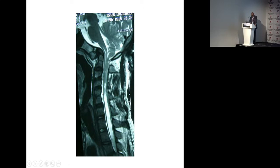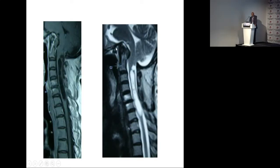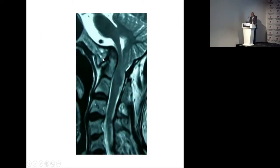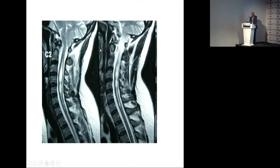Syringobulbia, Chiari, and syringomyelia — basilar invagination, Chiari malformation, syringomyelia — this is a common clinical triad. These three things are very commonly present today. Manifestly or radiologically identifiable atlantoaxial instability in Chiari is a very rare clinical event. Chiari malformation without bone abnormality at the craniovertebral junction is a much more common clinical entity.